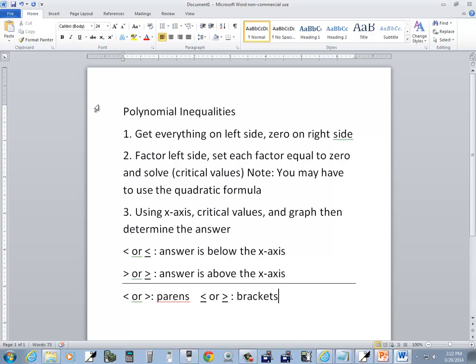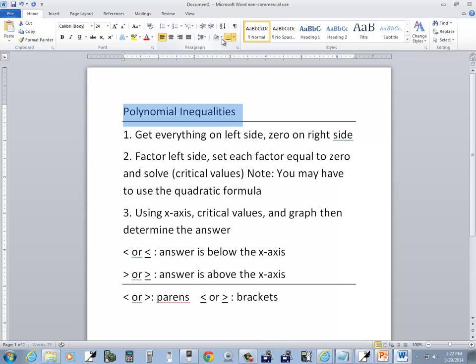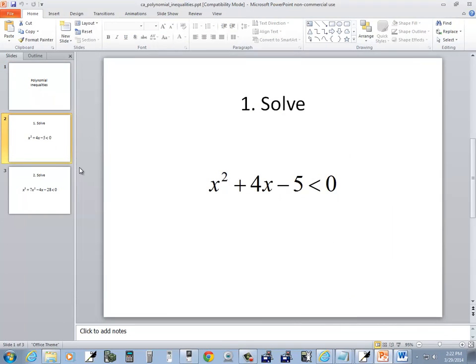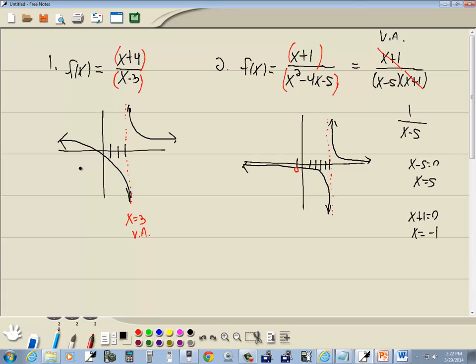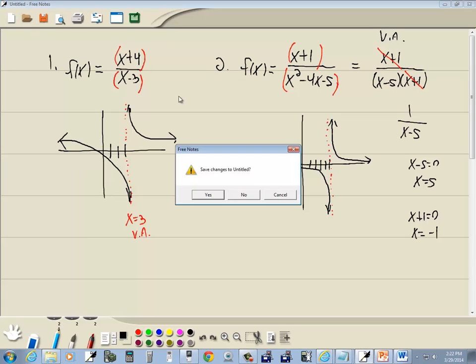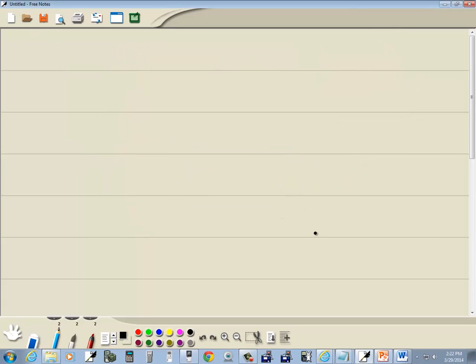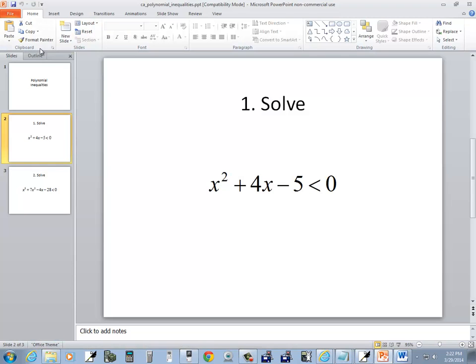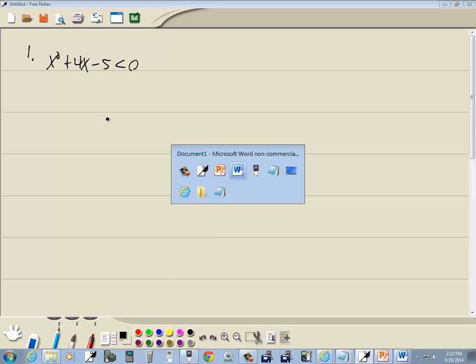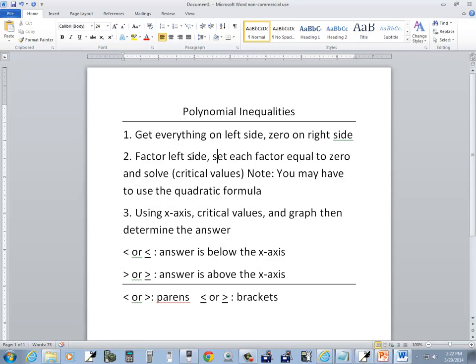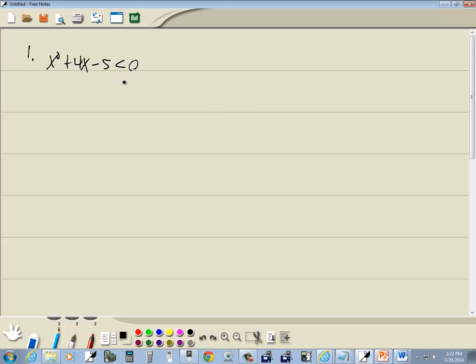Okay, well let's take a look at this with our first problem. This one here. So we've got x squared plus 4x minus 5 is less than zero. Our first step is to get everything on the left side, zero on the right side. And that's done.